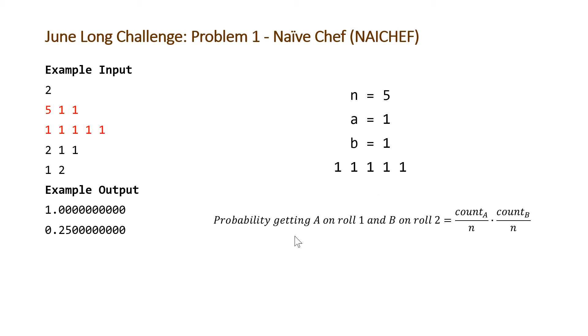And then the probability of getting A on roll 1 and B on roll 2 is just going to be the count of the number of faces with A divided by N. So that's the probability of rolling an A. And then the count of the number of faces with B on it over N. So that's the probability of rolling a B. So the probability of getting A on 1 and B on 2 is just going to be the probability of rolling an A multiplied by the probability of rolling a B.